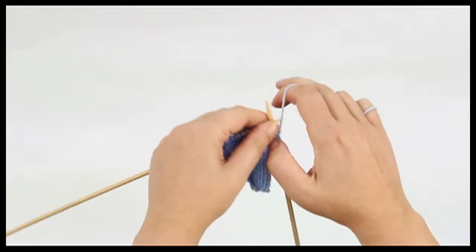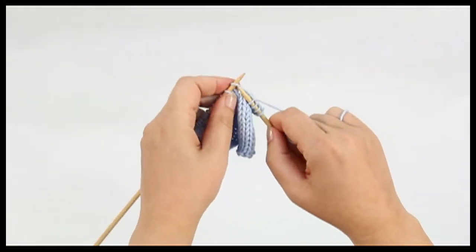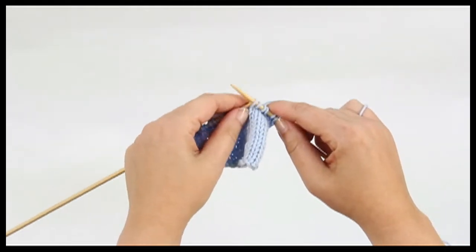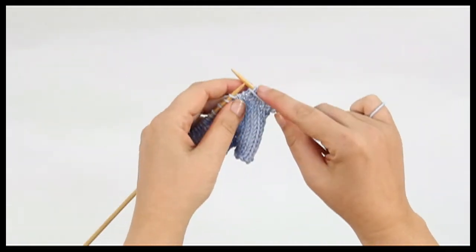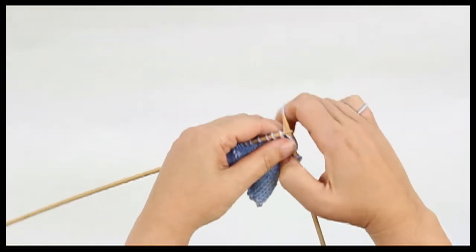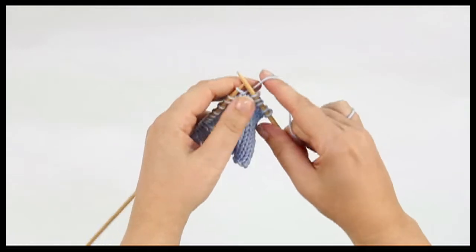You will work the number of stitches stated in the pattern before your wrapped stitch. You will then slip the next stitch purlwise, bring your yarn forward between the stitches, slip the stitch back onto the left-hand needle, and take the yarn to the back of the work.